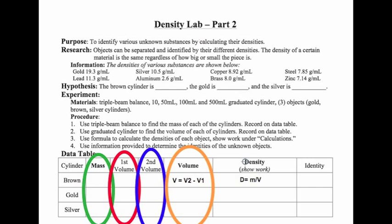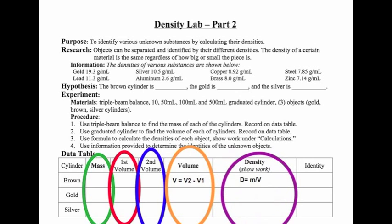Density is mass divided by volume. So take the mass you worked out and the volume you worked out, and divide them. Don't forget the unit: grams per milliliter.